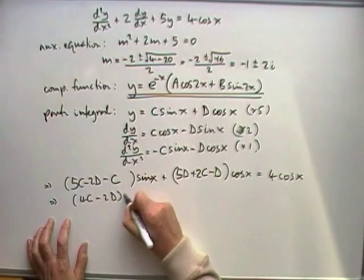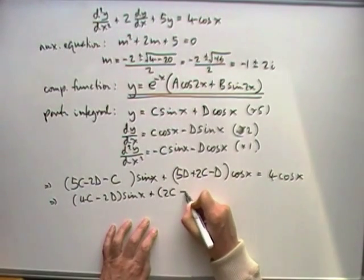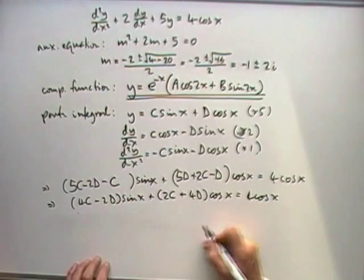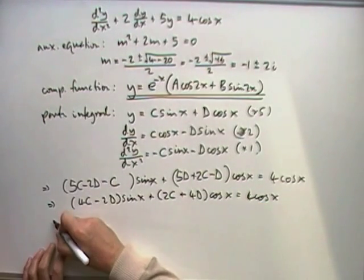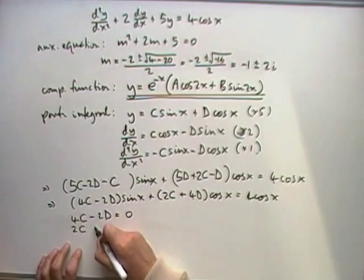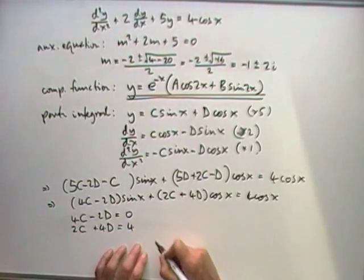Right, tidying that up, so that's going to be my sin x term, and that's going to give me the amount for the cos x term, and altogether it should give 4 cos x, which means that the part in front of the sin here, that is the 4D minus C minus 2D should be 0, and the part in front of the cos should come to 4.